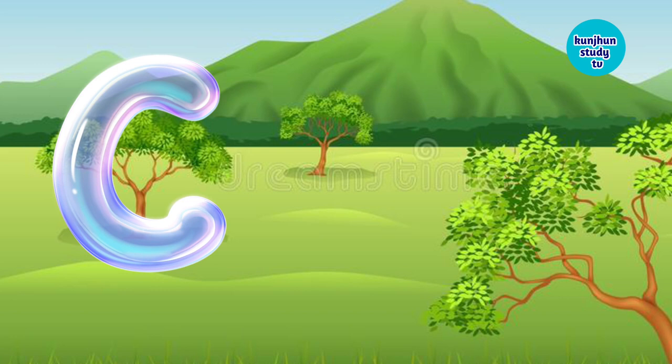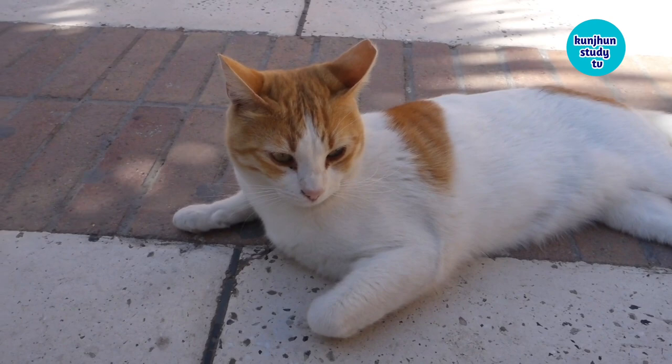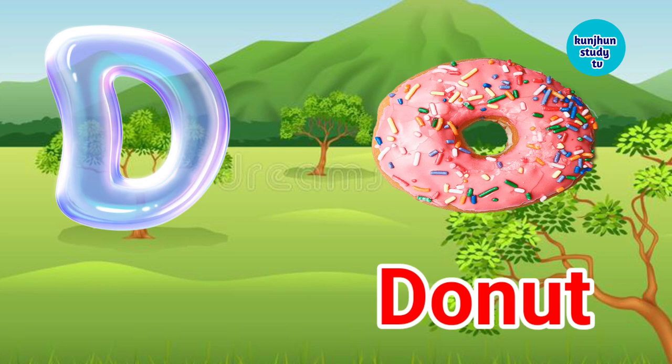C. C for cat. Cat means billi. D. D for donut. Donut means donut.